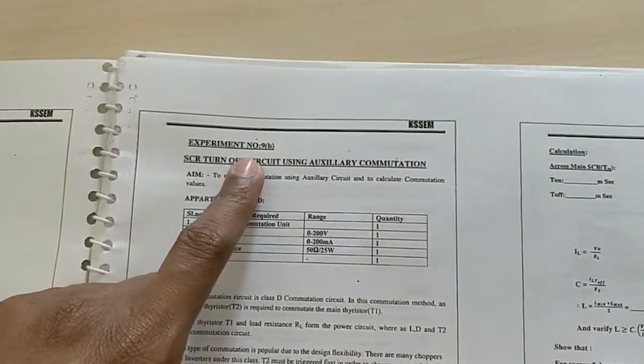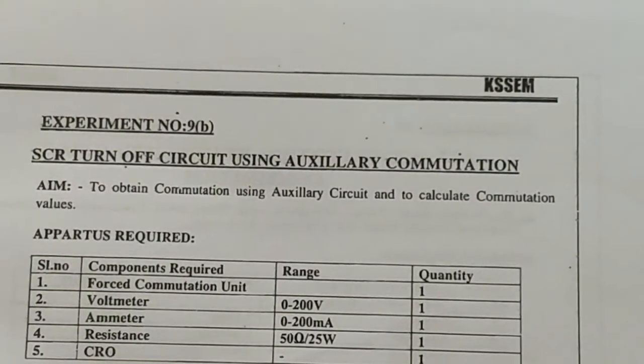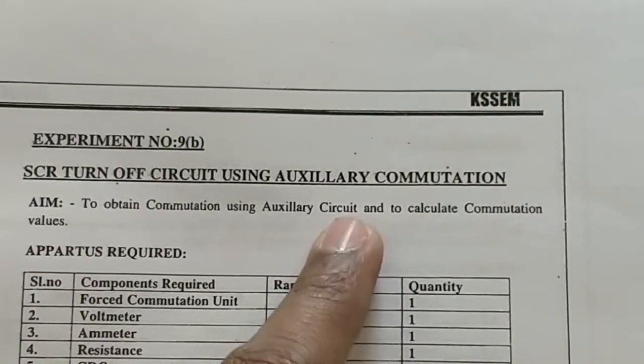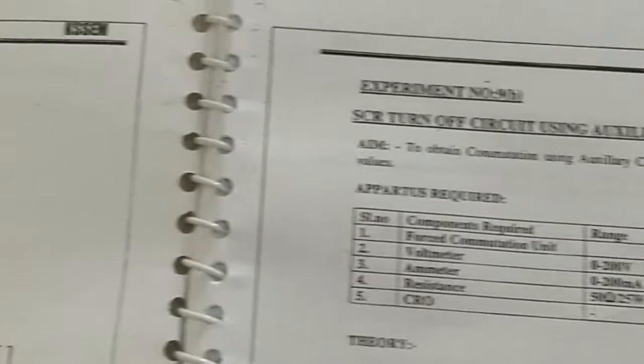Hi guys, so this is experiment 9B, from where we left off at 9A. This is a SCR turnoff using auxiliary commutation. What we did was force commutation or LC commutation, so we have a slight change in the circuit here.